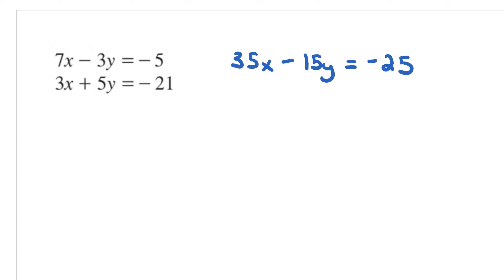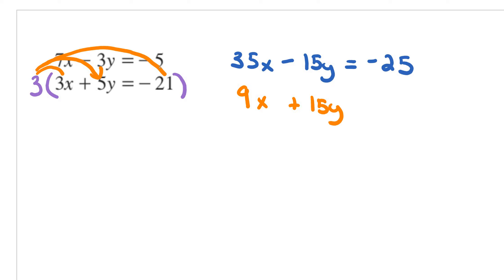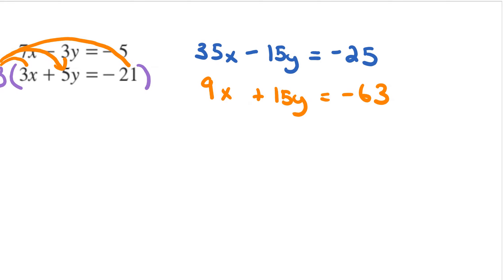For the second equation, I'll multiply everything by 3. So 3 times 3 is 9x. And then 3 times positive 5 gives me positive 15y, which is great. And then 3 times negative 21 is going to be negative 63. So equals to negative 63. This is looking good because the x variables are lined up, the y variables are lined up, and the constants are lined up on the right-hand side. Now ask yourself: here's my negative 15y and positive 15y — what can I do to make them cancel out? Do I add them or subtract them?